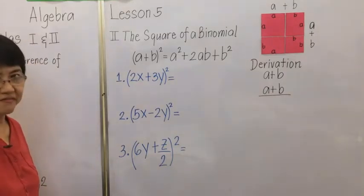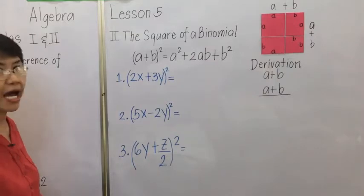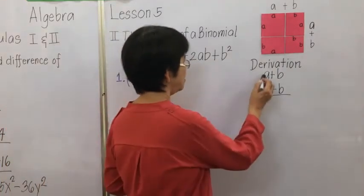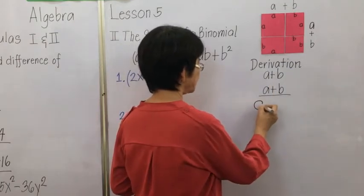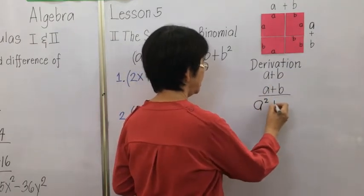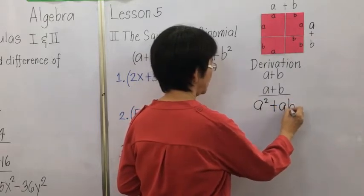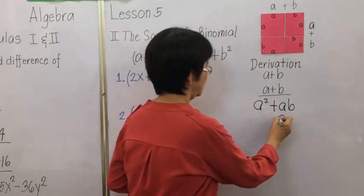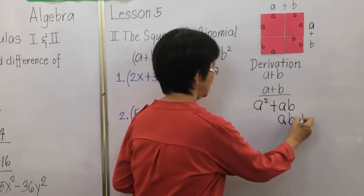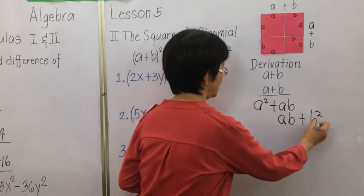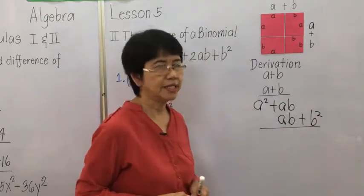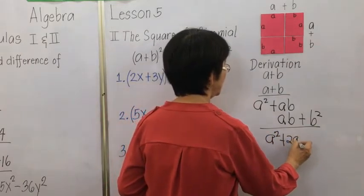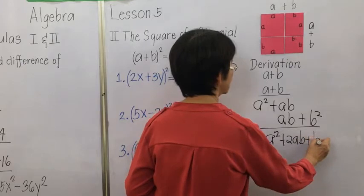Let's go to the derivation of the formula. We simply multiply a plus b by itself. We have a times a giving a squared, a times b giving ab, then b times a giving another ab, and b times b giving b squared. So the result is a squared plus 2ab plus b squared.